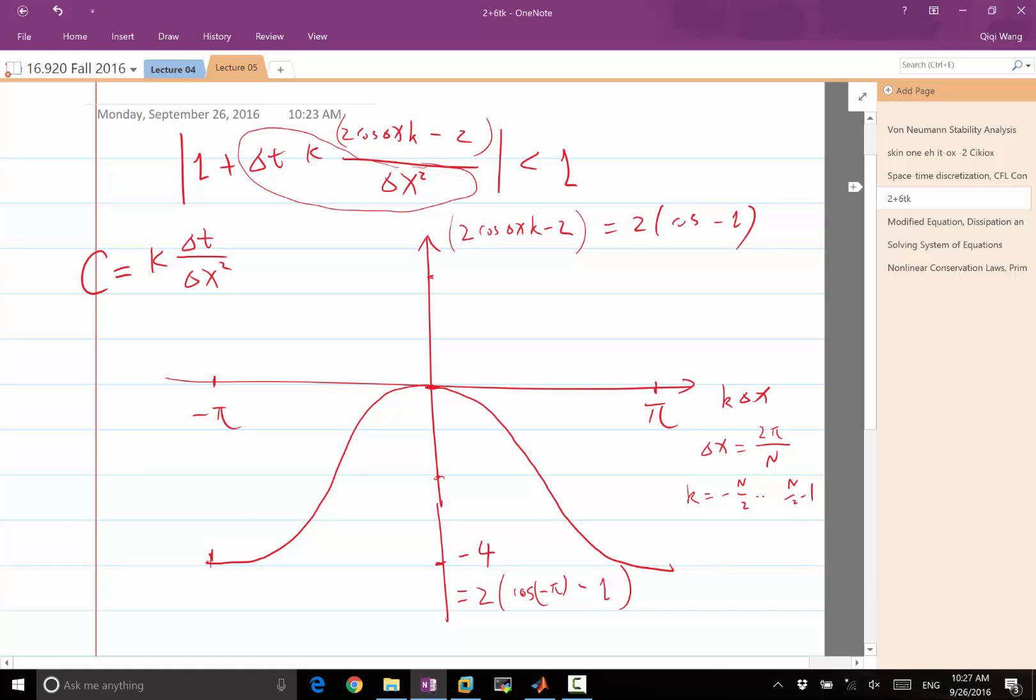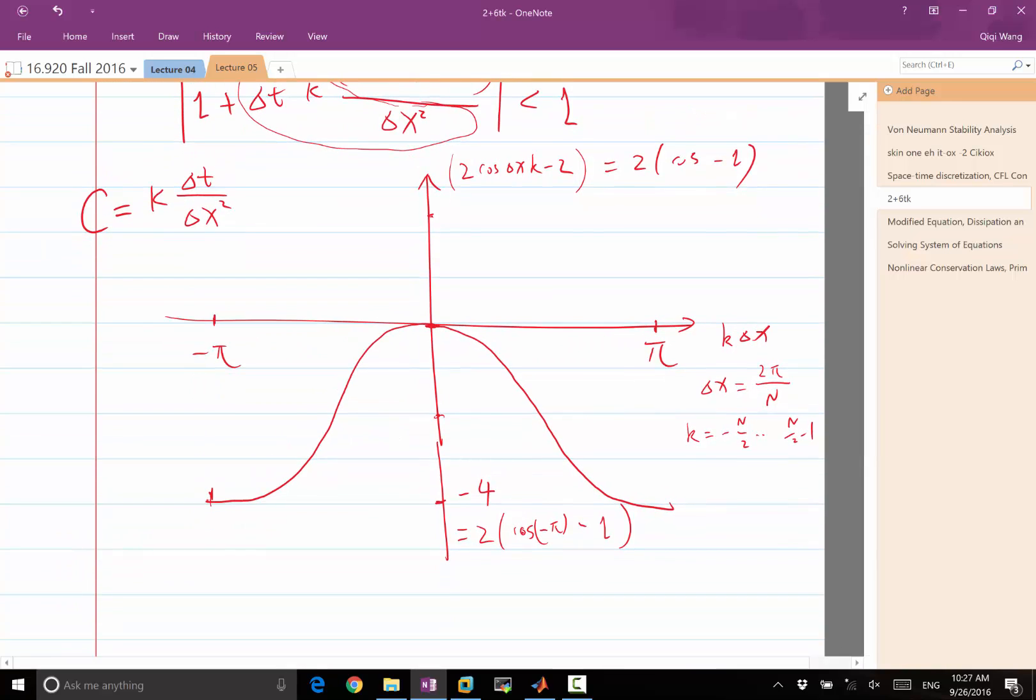So I want to make sure this number, which now I can write as 1 plus C times something that ranges from minus 4 to 0, has to be less than 1.